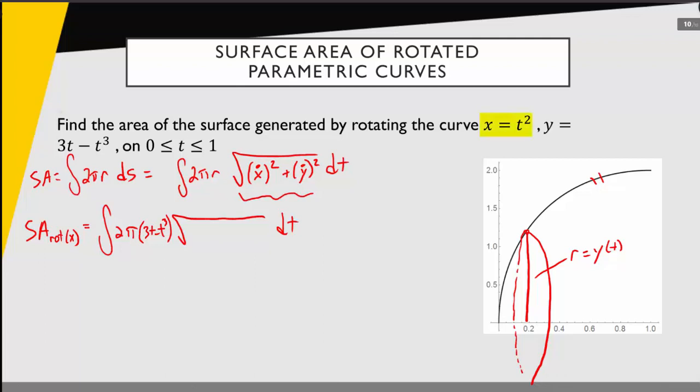x dot is going to be the derivative of x with respect to t—that'll be 2t—and then we'll square that. Derivative of y with respect to t is going to be 3 minus 3t squared, and we'll square that value as well.